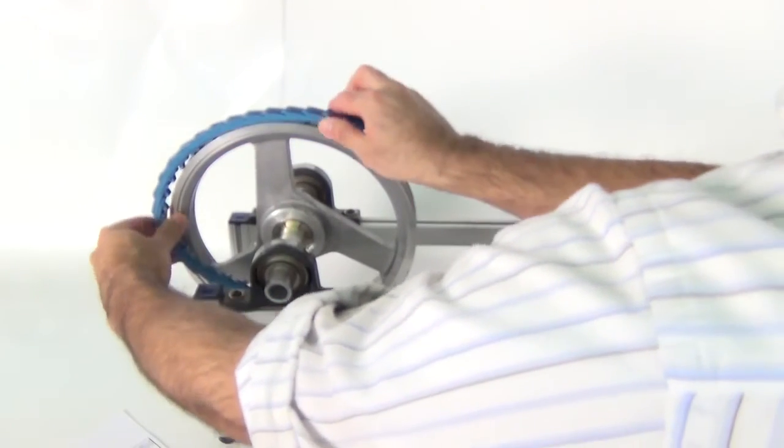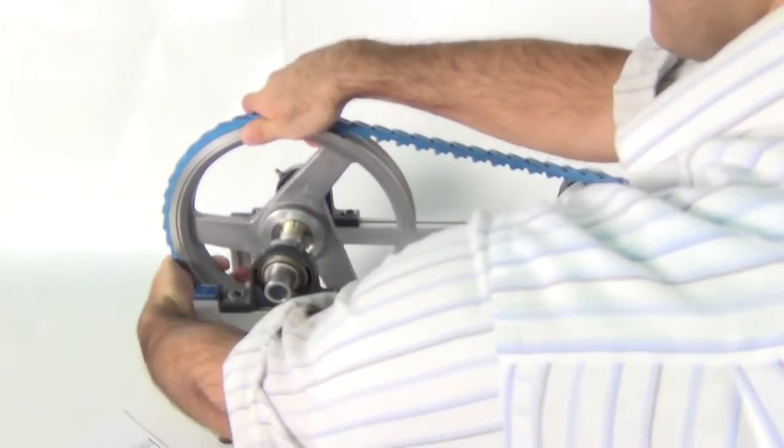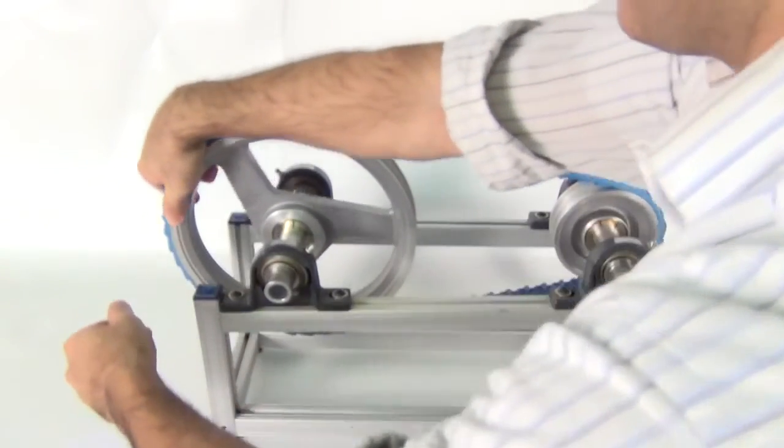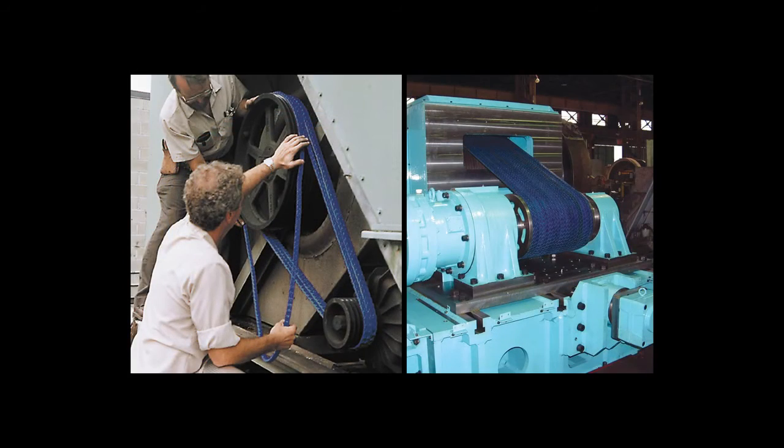Roll the belt onto the larger pulley, turning the drive slowly. Belt may seem very tight. That is okay. For multiple belt drives, work the belt from groove to groove.